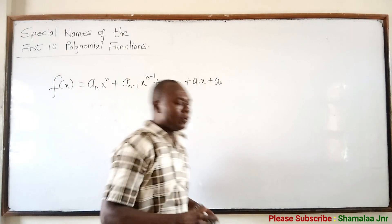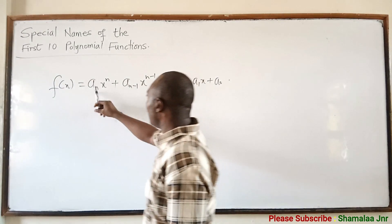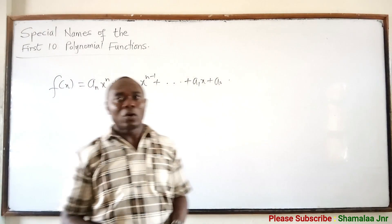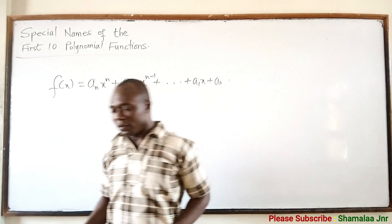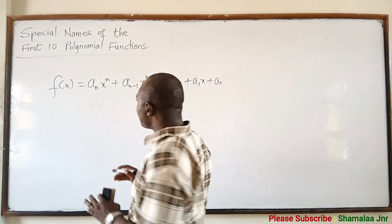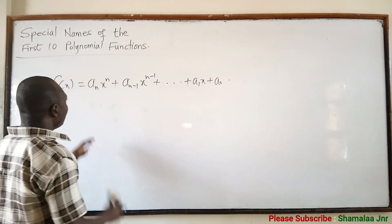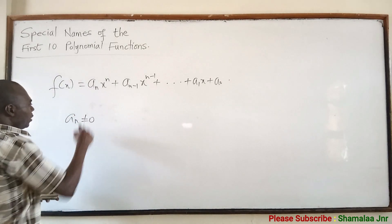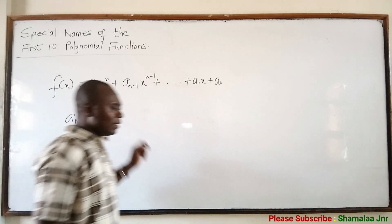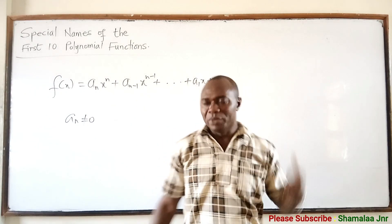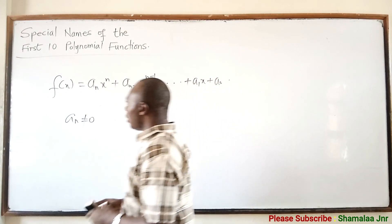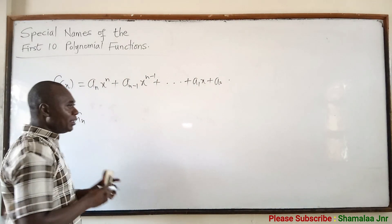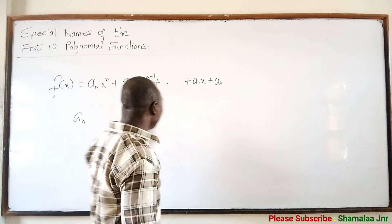Here x is a variable and a_n, a_(n-1), and so on down to a_1 and a_0 are constant coefficients, of which some may be 0. Now if a_n is not equal to 0, then n is the degree of this polynomial function, and you call a_n the leading or the first coefficient.